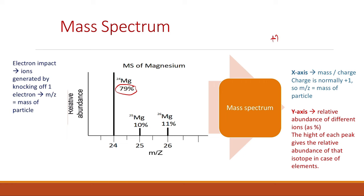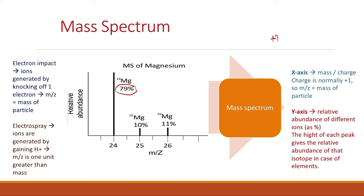Remember, there are two types of ionization: electron impact and electrospray. In electron impact, ions are generated by knocking off one electron, so the particles lose one electron with no change in mass. Therefore, the m/z value equals the mass of the particle. However, in electrospray, ions are generated by gaining a hydrogen ion, or a proton, which means the m/z value will be one unit higher than the actual mass of the particle.